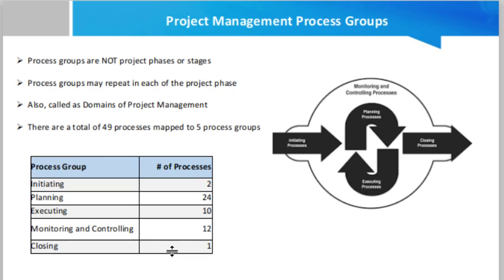First of all, notice that process groups are not project phases or stages. These process groups could be repeated in the project — they might be used in many places in the project lifecycle and are not sequential steps for completing a project. Despite not truly being project phases, they are often referred to as the five phases of project management. A project manager must understand how and when to apply these processes.